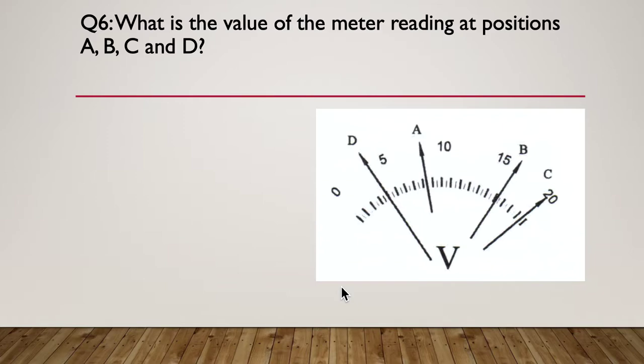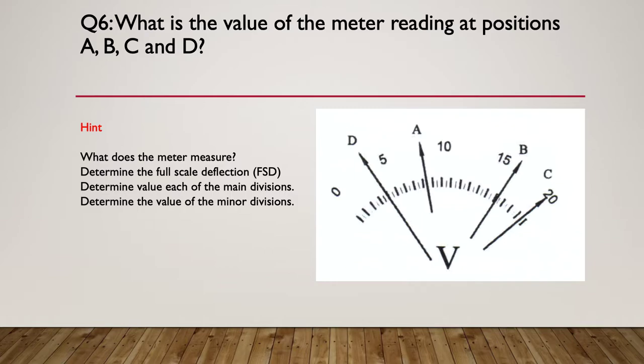Question six. What is the value of the meter reading at positions A, B, C and D? So have a think about that and pause the video. Here's our hint. So what does the meter measure? What units is it measuring? Determine the full scale deflection, the FSD. Determine the value of each of the main divisions, and then determine the value of the minor divisions. And then you can use those to determine what positions A, B, C and D represent. So pause here if you need to and adjust your answers if required.